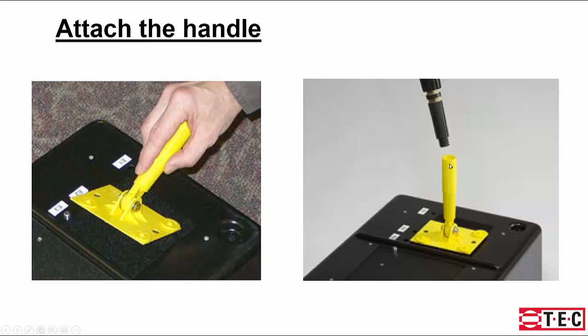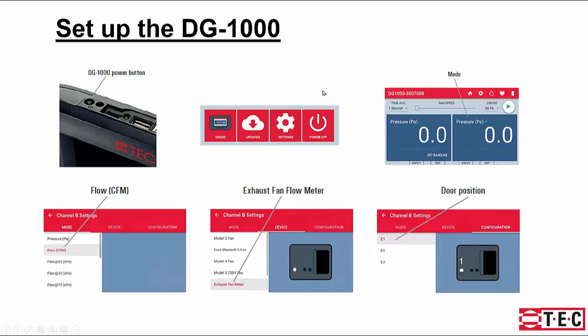You'll set up the DG-1000 by holding down the power button until the light comes on. When the home screen appears, touch the gauge app. Once the gauge app appears, touch the mode section.